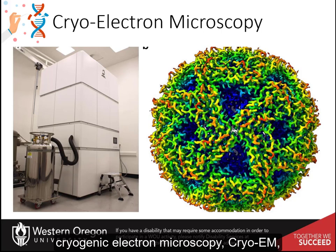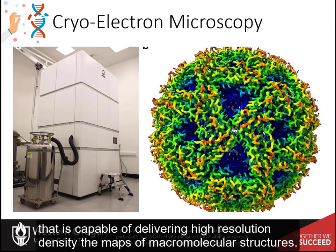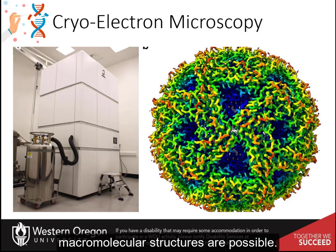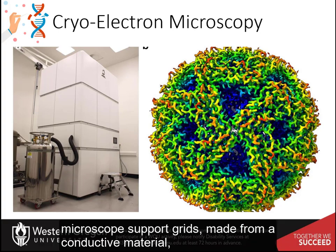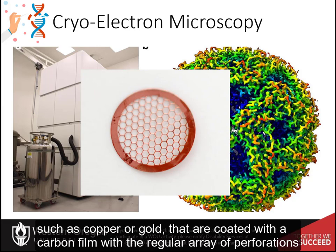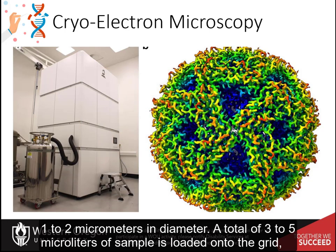Cryogenic electron microscopy, cryo-EM, has recently emerged as a powerful technique in structural biology that is capable of delivering high-resolution density maps of macromolecular structures. Resolutions approaching 1.5 angstroms are now possible, and the determination of very large macromolecular structures is possible. In this technique, protein suspensions are frozen on 3 mm diameter transmission electron microscope support grids made from a conductive material such as copper or gold, coated with a carbon film with a regular array of perforations 1 to 2 micrometers in diameter. A total of 3 to 5 micrometers of sample is loaded onto the grid.